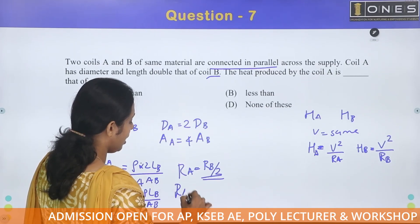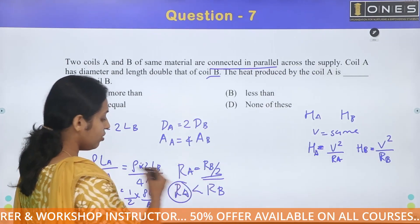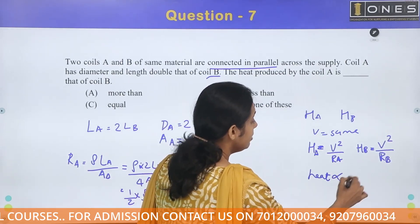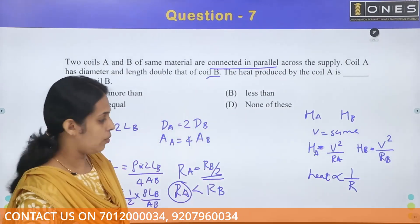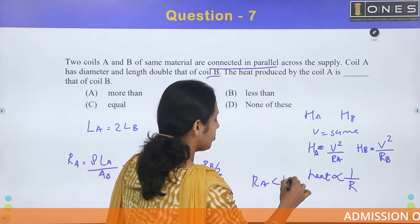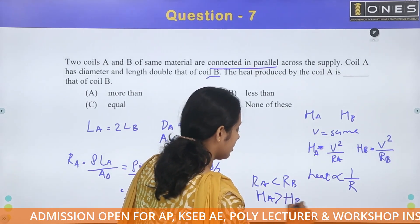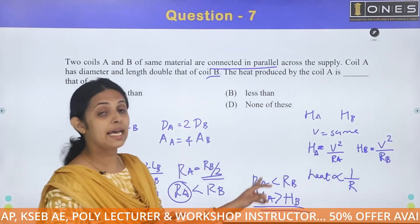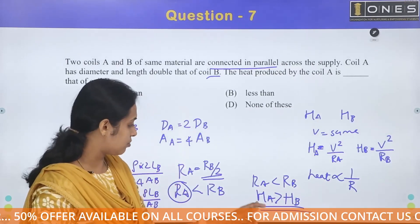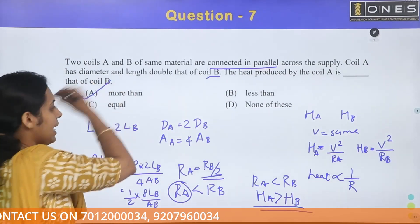Therefore RA is less than RB. Since in a parallel circuit heat is inversely proportional to resistance, the coil with lower resistance produces more heat. Since RA is less than RB, HA will be greater than HB. The heat produced by coil A is more than coil B. Option A is the correct answer.